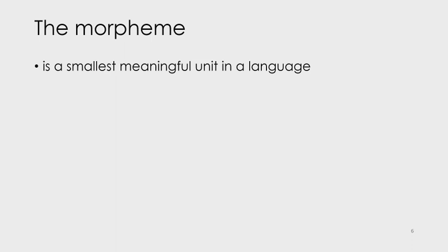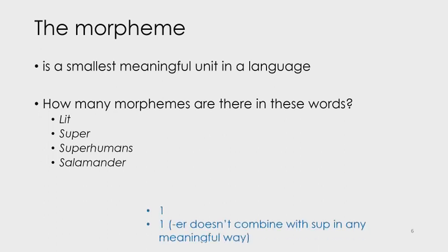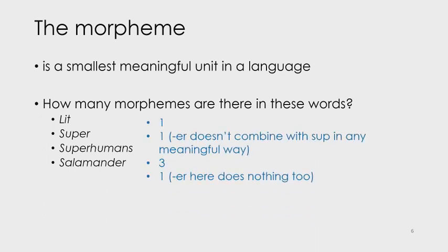You can think of the morpheme as being the smallest meaningful unit in any language. Using that criteria, how many morphemes are there in these words? Lit, as in 'this party is very lit'; super, as in 'this lecture is super'; superhumans; salamander. I'll give you a moment for this. If you've said one, one, three and one, you're right.